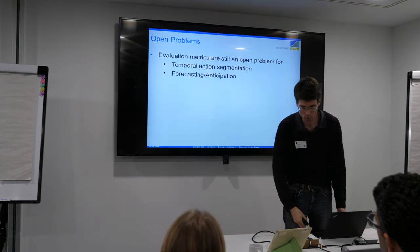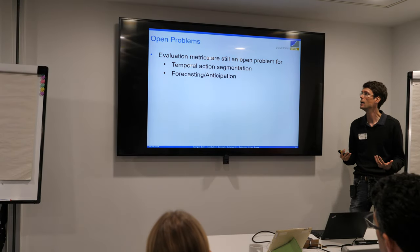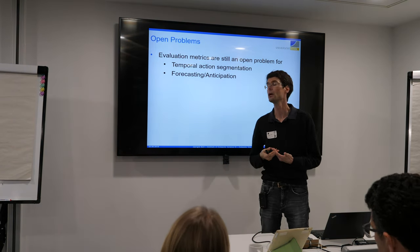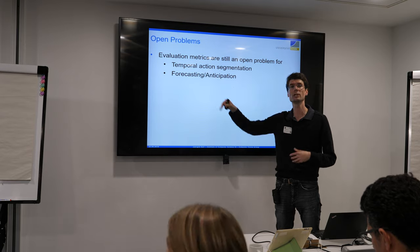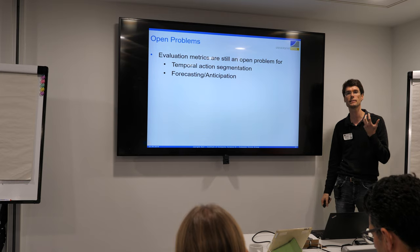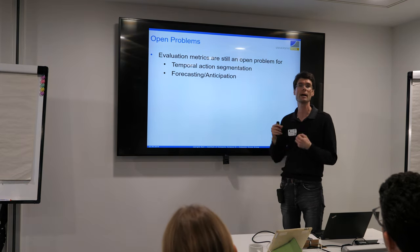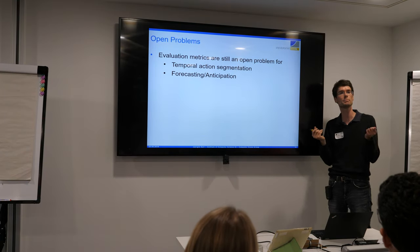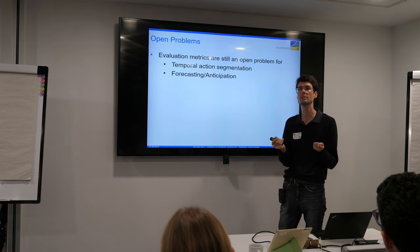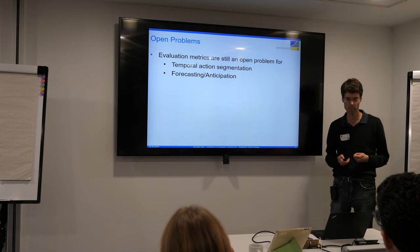This brings me to open problems. One is evaluation: for forecasting, the L2 norm is the standard measurement but makes no sense for the task. For temporal action segmentation too, it's still not clear what the best measurement is — how accurately do motion boundaries need to be located? Choosing the right evaluation metrics remains an open problem.